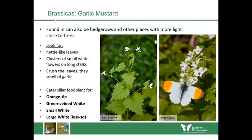Garlic mustard is one of the most important caterpillar food plants for orange tips, green-veined white, small white and to a lesser degree large white butterflies. The male orange tip feeds from the flowers, while females come and lay their eggs upon the seed pods around the top.